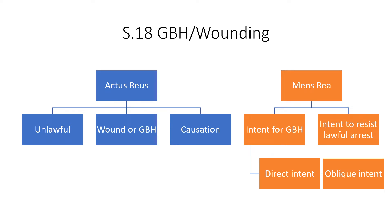We need to consider what each of these elements are. We're going to deal with the actus reus first and then consider the mens rea. When we consider the actus reus, we'll start with 'unlawful', then the wound or GBH, and the idea of causation, before moving into the mens rea.